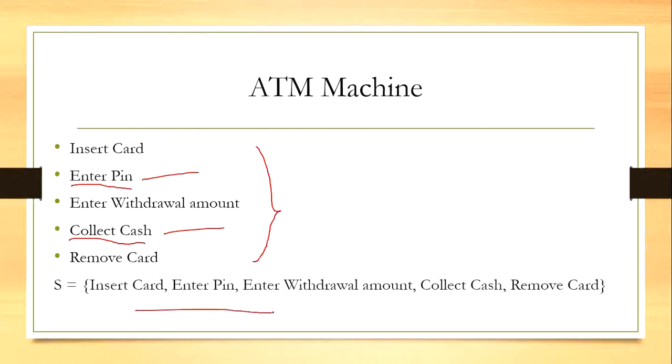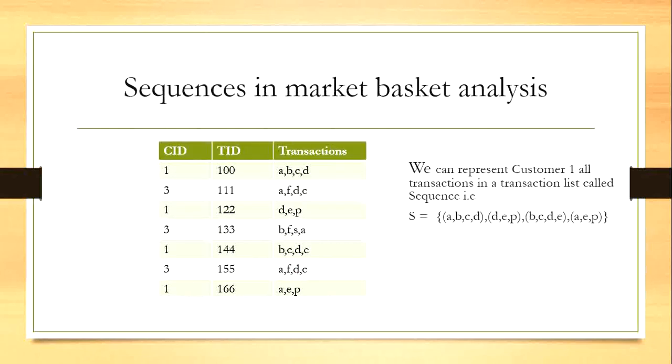This is one of the examples for sequences, and we can also have sequences with respect to market basket analysis. So here if we consider this transaction database, CID is customer ID, TID is transaction ID. Transaction is a list of items bought by the customer.